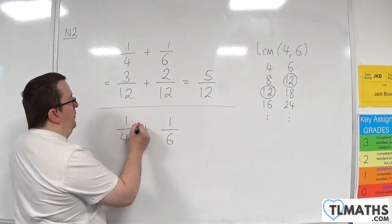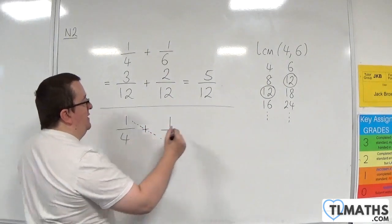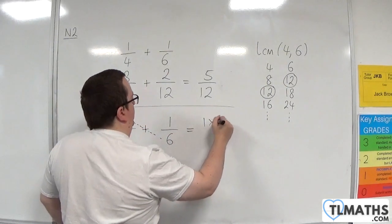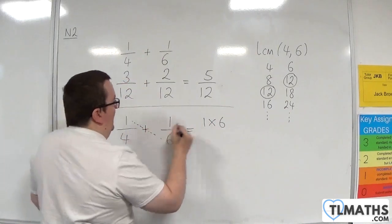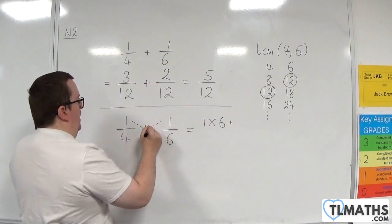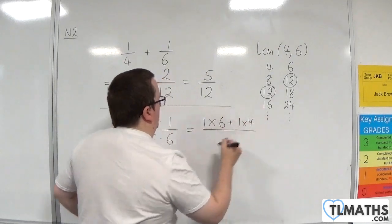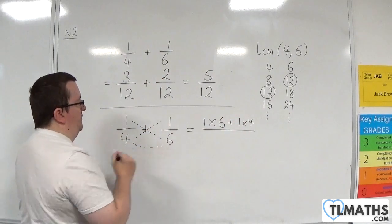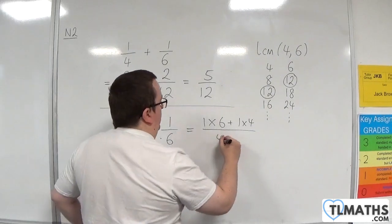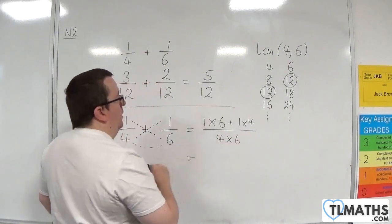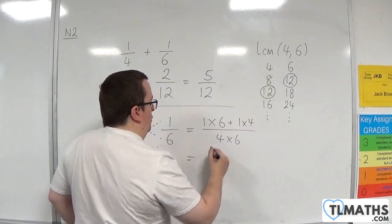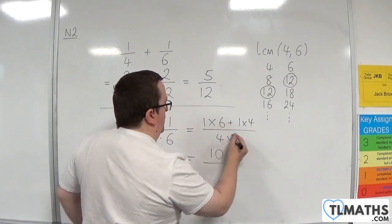So what I'm going to do is first of all multiply the leading diagonal, so 1 times 6, and then add the other diagonal, 1 times 4, over the product of the denominators, 4 times 6. So we get 6 plus 4, which is 10, over 24.